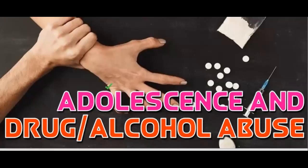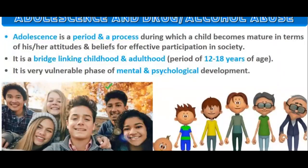Next we have adolescents and drug abuse. Adolescents are very prone to drug addiction and other diseases because during that period they are very vulnerable to negative thoughts and mental illness. Adolescence is a period and process during which a child becomes mature in terms of attitude, beliefs, and effective participation in society. Adolescence is a bridge that links childhood and adulthood — the period of 12 to 18 years of age.